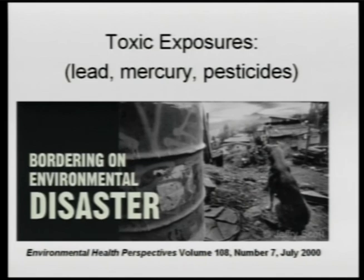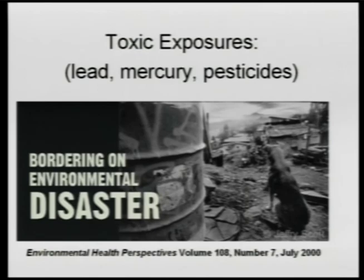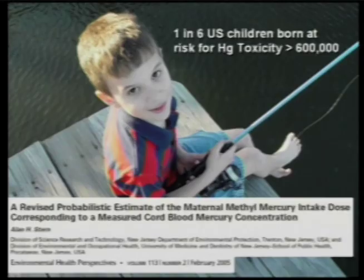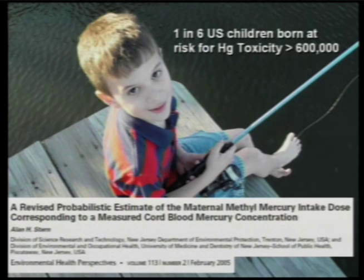This article from Environmental Health Perspectives in July 2000 talks about bordering on environmental disaster. We've exported much of our toxicity to third world countries so they could manufacture poisonous things for us. However, the global environment is such that trade winds and water currents bring it all back — it gets into our fish, our birds, our atmosphere. That's my son Matthew when he was younger, sitting on grandpa's dock in Florida fishing, to remind us that 1 in 6 children in the US are born toxic to mercury because of maternal fish consumption and maternal amalgam.